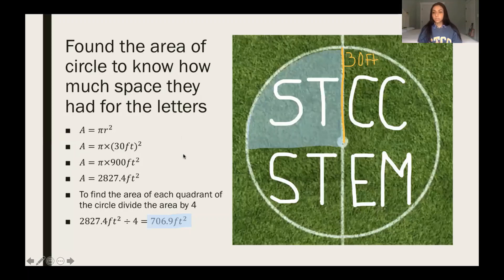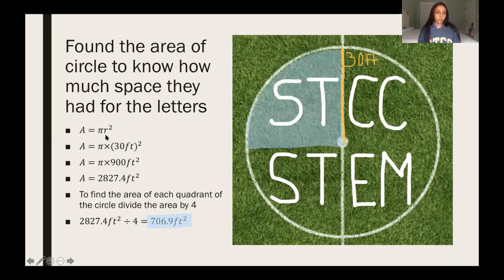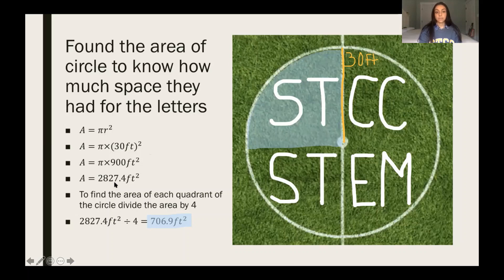Next, they needed to find the area of the circle to know how much space they had for each of the letters. They broke the letters into pairs and needed to find the area of each of the quadrants. To find the area of a circle, it's π times r². The radius is 30 feet, so when you square that you get 900 feet². That times pi equals 2827.4 feet². Now that's the area of the total circle, but to find it for just one quadrant, you divide that by 4, giving an area of 706.9 feet² for just one quadrant.